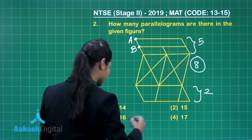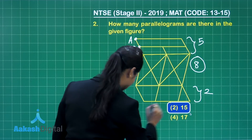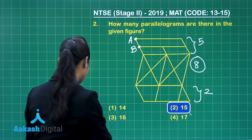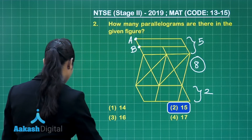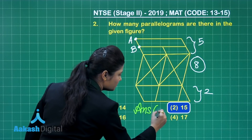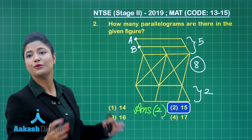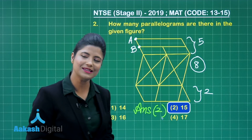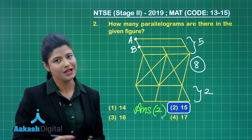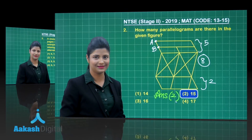So the correct answer for this question is option number 2, which is 15 parallelograms. Now let us take up question number 3.